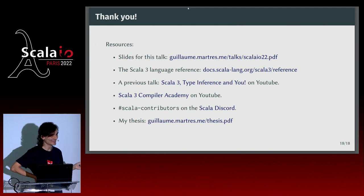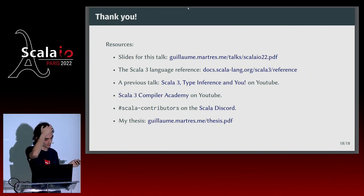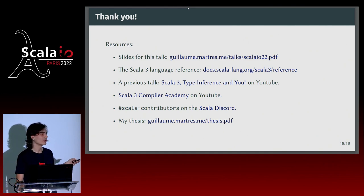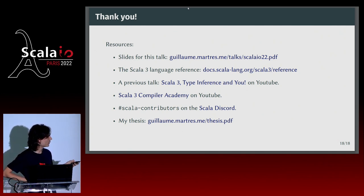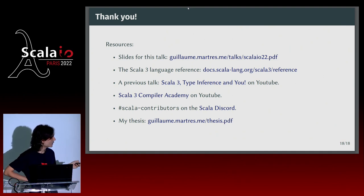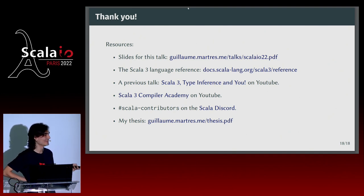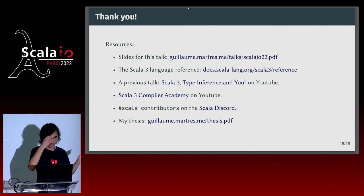That's all I had. There are many more things I could talk about — like type inference and member lookup with implicit conversions or structural types — but I'll leave that for another time. Resources: the slides for this talk are online; the Scala 3 language reference covers some of what I discussed but needs to be more complete; I have a talk on type inference; there's a YouTube channel on compiler hacking; a contributors channel on the Scala Discord; and my thesis, which I don't recommend reading, but it formalizes a small subset of Scala. Thank you, happy to answer any questions.